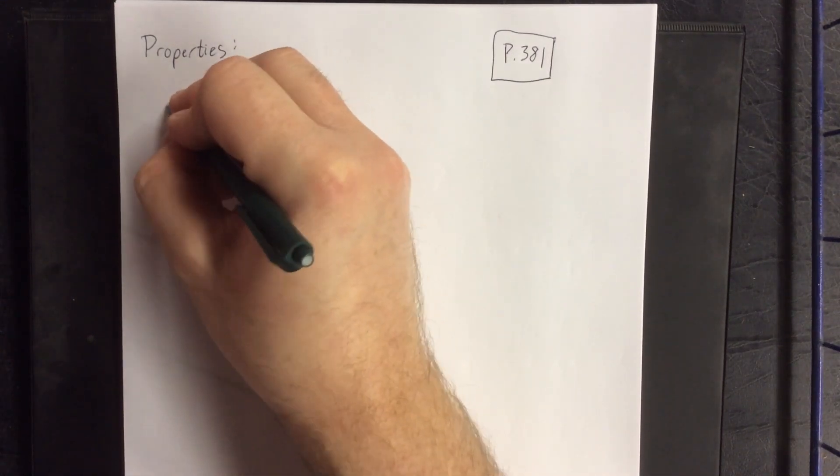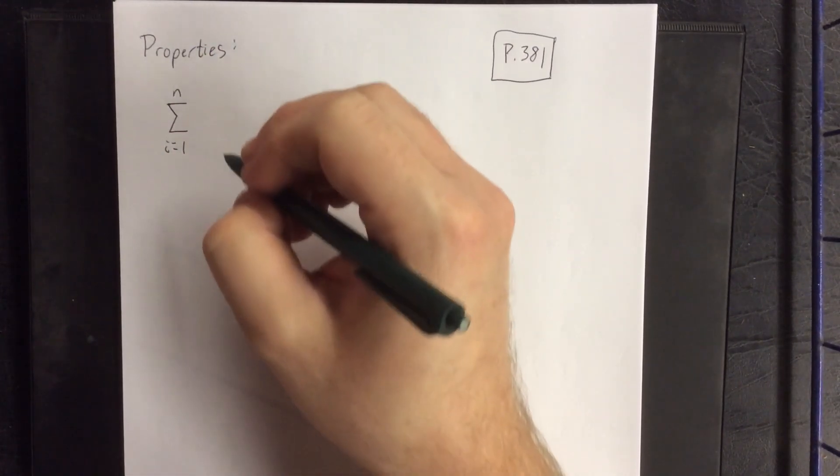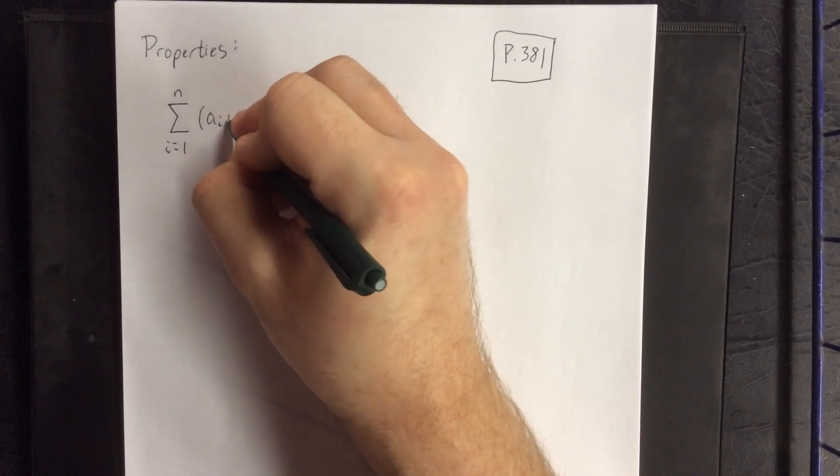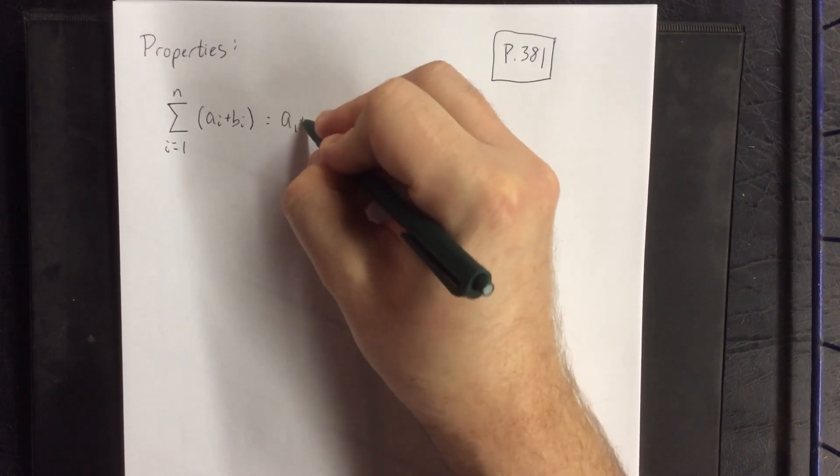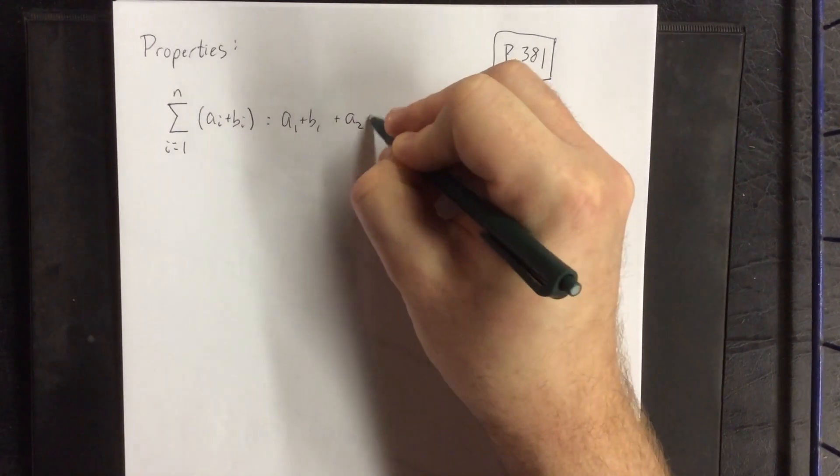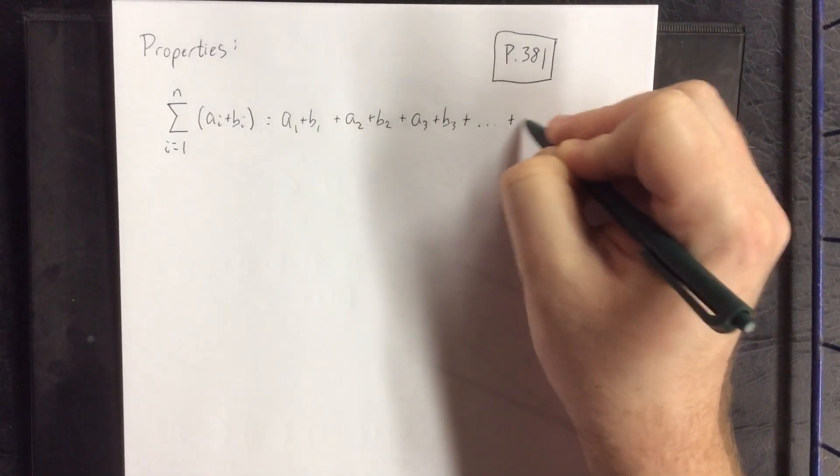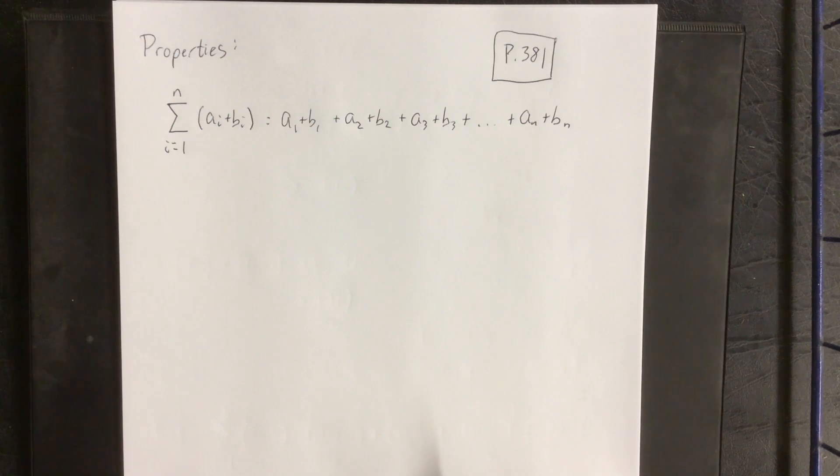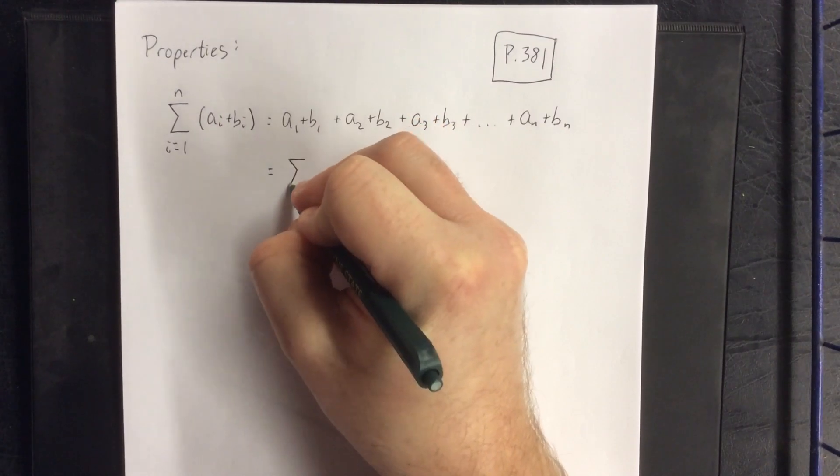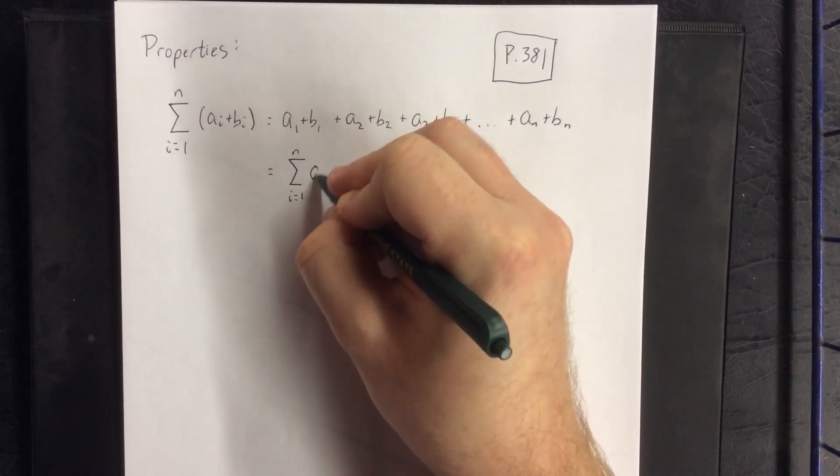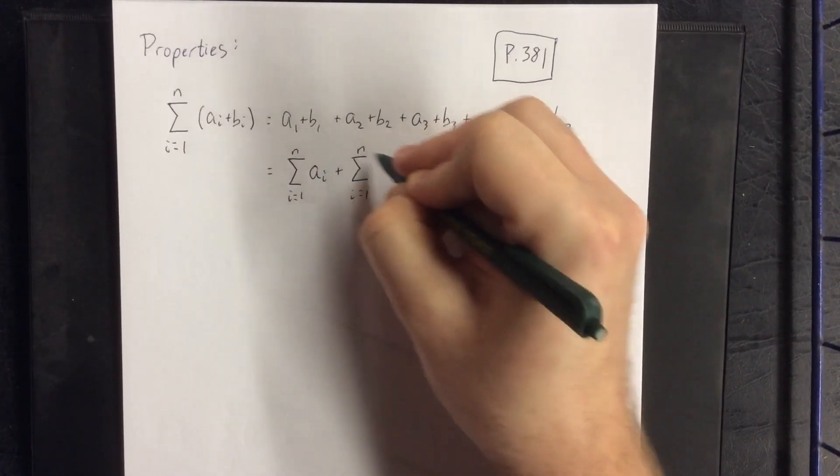So these properties of summation notation are the following. If I take the summation from I equals one to whatever ending point, we'll call it N, of a sum of two different kinds of summations, you can interpret this to mean a1 plus b1 plus a2 plus b2 plus a3 plus b3 plus this pattern will continue all the way up till you get to whatever your ending end value is. Now that means that what I could do is group all of the a terms together and group all of the b terms together and split this up into two different summations.